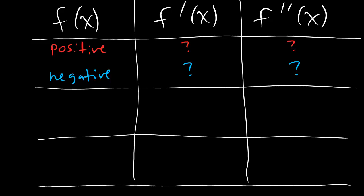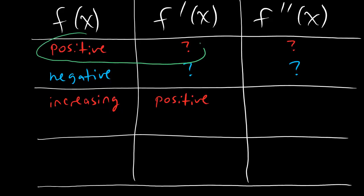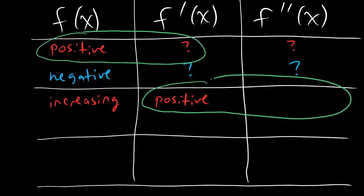Now let's talk about something where there is a relationship. What if the original function is increasing? You should already know that the original function being increasing means that the derivative is positive. But what can we say about the second derivative? Well, if the first derivative is positive, whatever your function is, if your function is positive its derivative could be anything. So we just don't know in this case what the second derivative is going to be.